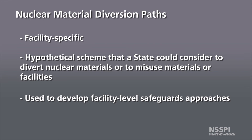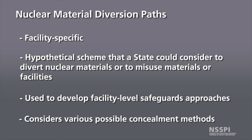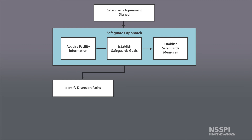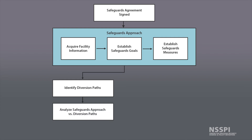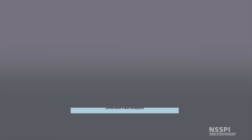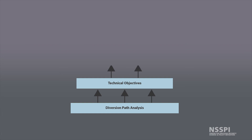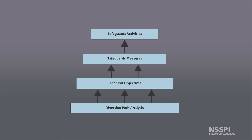In developing the safeguards approach, it must be assumed that a diversion path could include one or more concealment methods. The IAEA can then analyze its safeguards approach against the material diversion paths that have been developed. The purpose of this diversion path analysis is to determine whether a proposed set of safeguards measures would provide sufficient detection capability with respect to a specific diversion path.